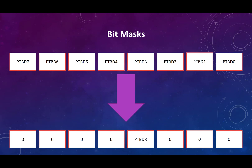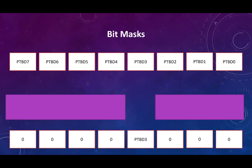Now let's think about how to do this in terms of a logical operation. What we want to do is take each of the bits and change them, either to zeros or to their original value. We want to know what operation to use and also what values to put into the other side of that operation. One side is going to be PTBD, but what values do we use to get rid of some of those things?